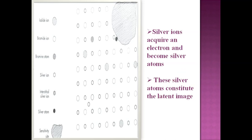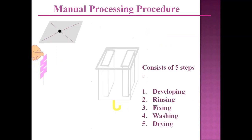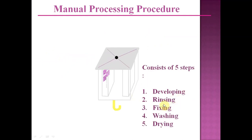These silver atoms constitute the latent image. The image is produced but not in a visible state — it is invisible. The chemical reaction has happened; now we need to make the latent image visible and permanent. That process has basically five steps: developing, rinsing, fixing, washing, and drying.